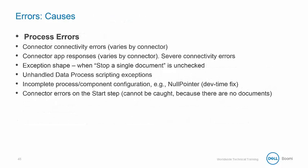Process errors are caused by connector connectivity errors or connector application responses. The Exceptions shape with the Stop Single Document option unchecked can also cause a process error, as can unhandled data process scripting exceptions. Process errors also include incomplete process or component configuration, like a null pointer, and finally connector errors on the Start shape where no documents are pulled into the process.